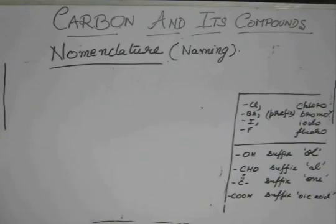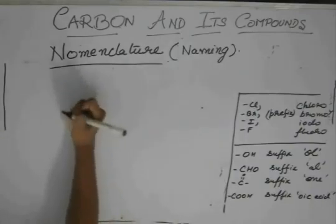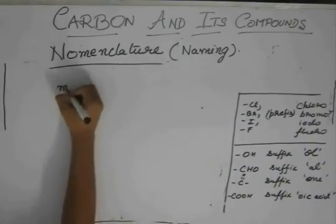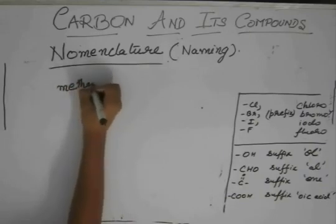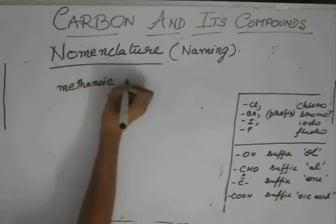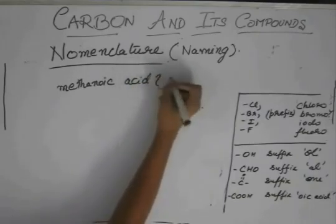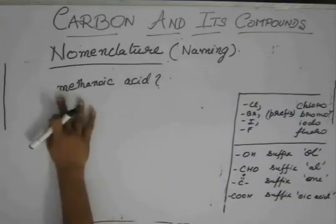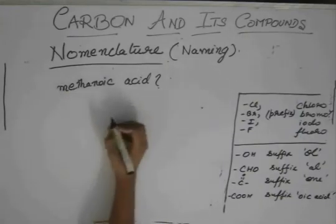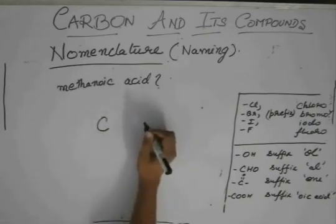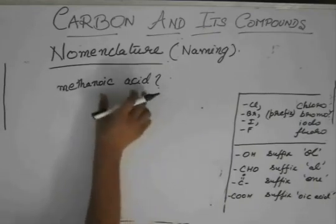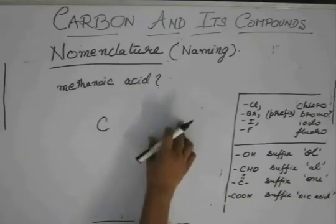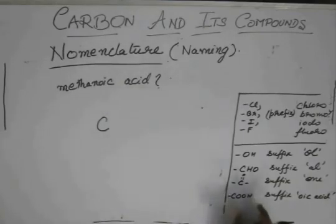Okay. So, if I tell you to draw the structure of methanoic acid, now what will you do? See, again, it is meth. So, only one carbon. Draw that carbon first. And it is an acid. So, this COOH group is present.